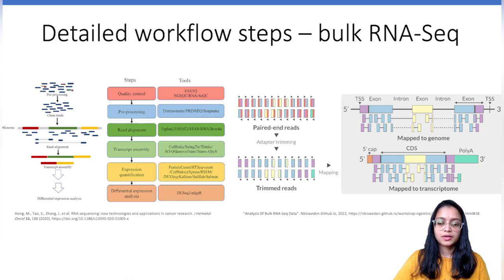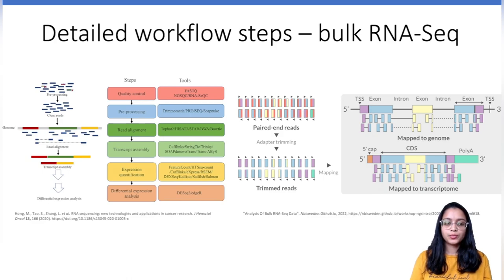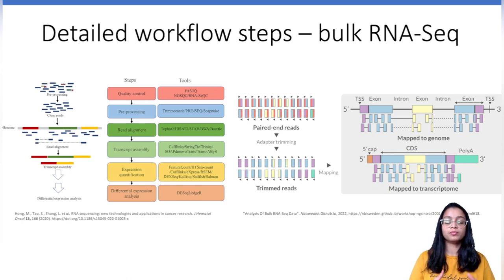After read alignment, the next step is to assemble transcripts from the reads mapping to transcripts. Tools like Cufflinks, StringTie, and Trinity can be used for transcript assembly from short reads. Once transcript assembly is completed, it can be used to quantify expression at the gene, transcript, and exon level. Commonly used tools for gene-level quantification are featureCounts and HTSeq-count. For transcript-level quantification, Cufflinks and RSEM can be used. DEXSeq provides exon-level quantification. There are also alignment-free tools like Kallisto and Salmon that consume less computational resources.